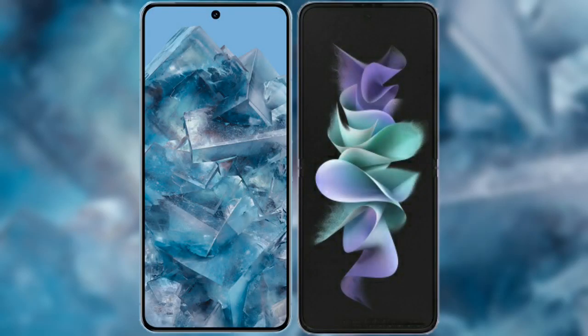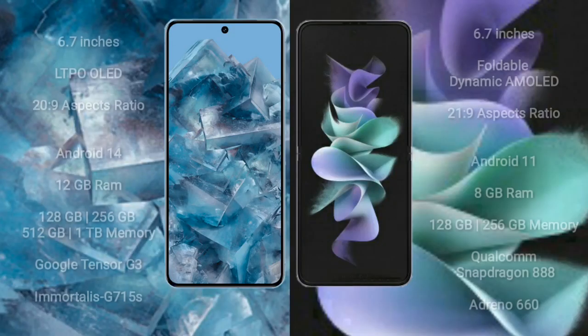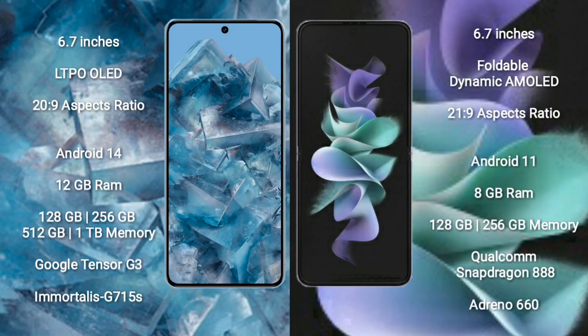I will compare the new Google Pixel 8 Pro with Samsung Galaxy Z Flip 3. Google Pixel 8 Pro comes with a 6.7-inch LTPO OLED display at a 20:9 aspect ratio. Samsung Galaxy Z Flip 3 comes with a 6.7-inch foldable Dynamic AMOLED display at a 21:9 aspect ratio.